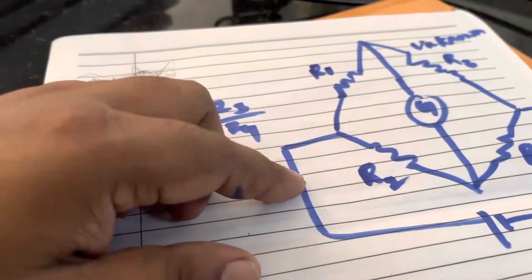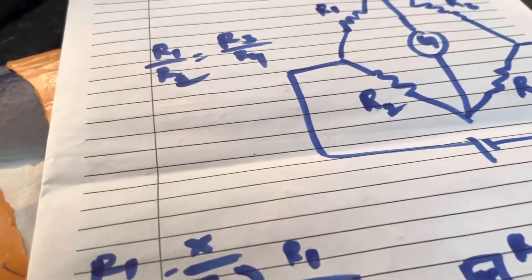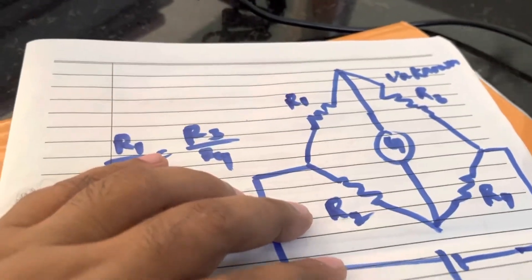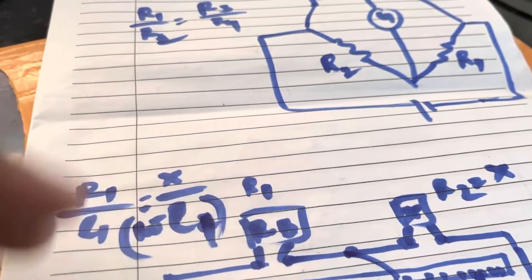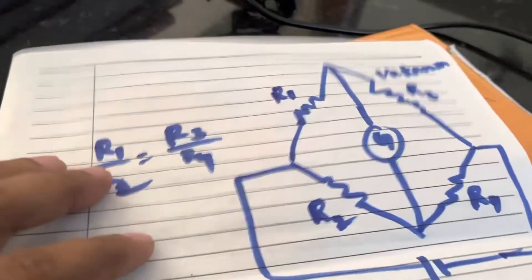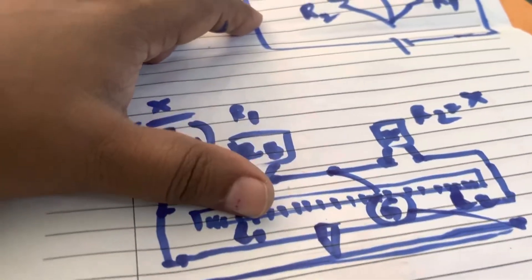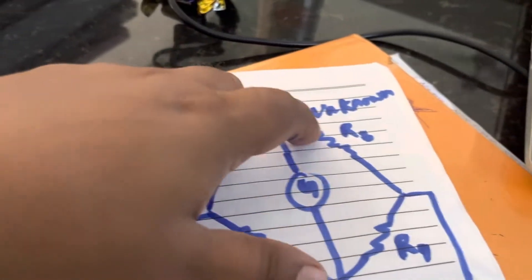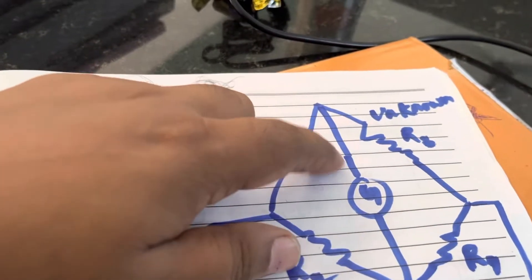In this experiment of the meter bridge to find out the unknown resistance, experiments two and three have similar connections. If you understand this one, you can easily perform the next experiment too. The meter bridge is an application of the Wheatstone bridge, which has four arms with four resistors R1, R2, R3, and R4, where R3 is the unknown resistance.